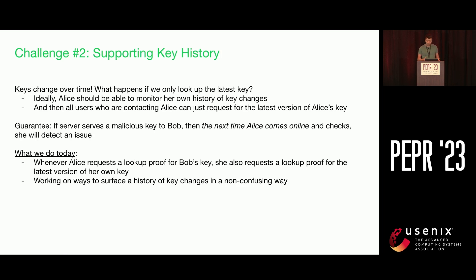The problem is that in our current deployment, we haven't found a good way to surface the history of key changes for users, for multiple reasons. It's not something we necessarily expect people would remember or be able to make use of — for example, the last time they changed their device. So this is something we're still working on. Right now we have a stopgap solution, which is to allow for doing dual lookup proofs: checking the latest version of my key and the latest version of my contacts' key. We have some thoughts for how we want to support full history, but they're still being worked on.